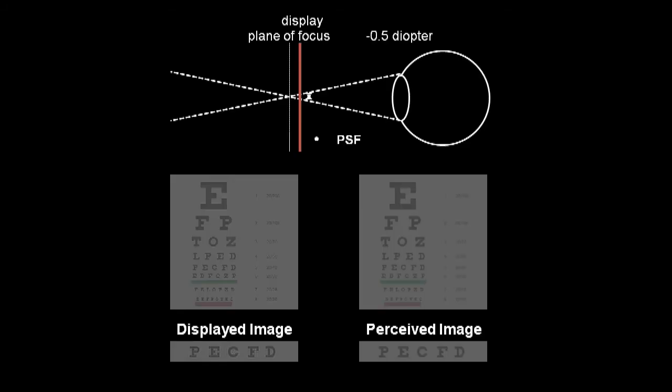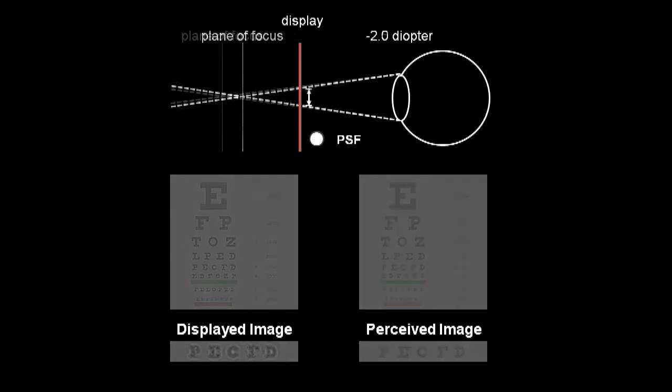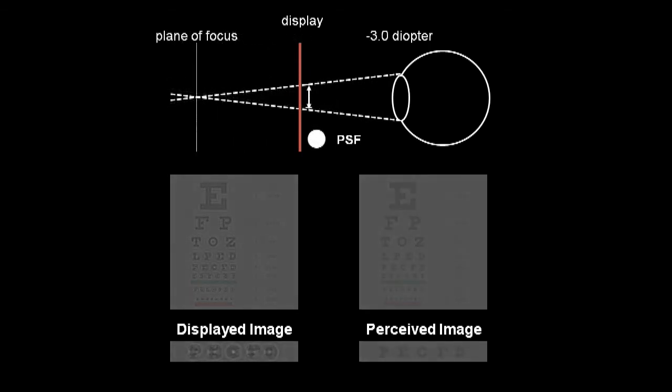In prior work, a pre-filtered image is displayed to correct for defocus. This image is produced by deconvolving the original image by the point spread function. While restoring sharp vision, contrast is significantly reduced.